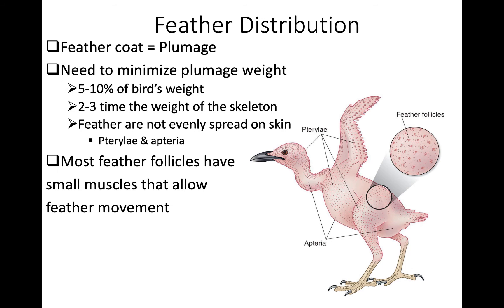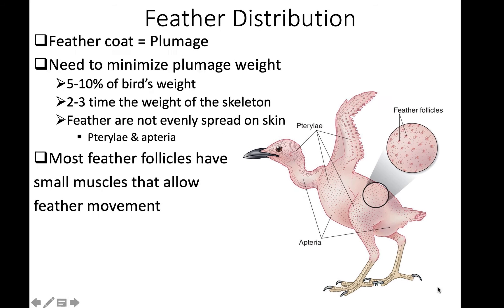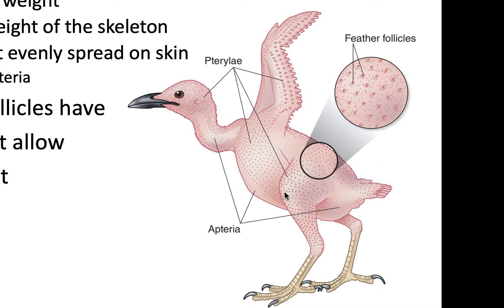The entire coat of feathers a bird has is called the plumage. Birds want to stay as lightweight as possible — individual feathers are light, but collectively the plumage equals about 5 to 10 percent of a bird's weight, which is actually two to three times the weight of the skeleton in most birds. Feathers are not evenly spread on the skin but come from follicles concentrated in certain areas.